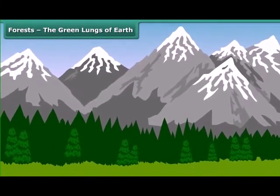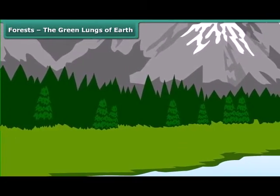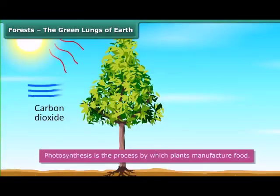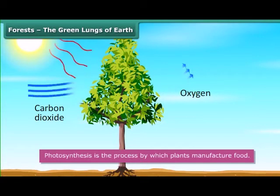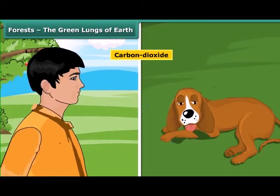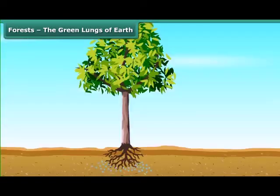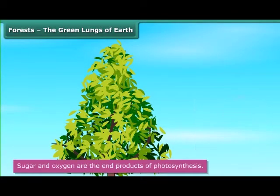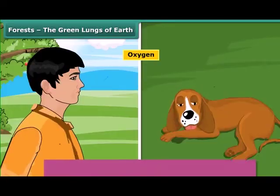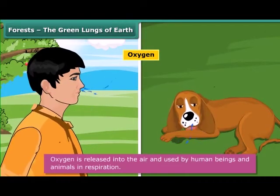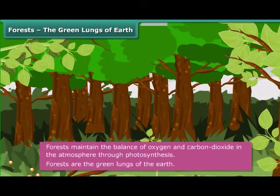Hills have dense forests. Forests maintain the balance of oxygen and carbon dioxide in the atmosphere through photosynthesis. Photosynthesis is the process by which plants manufacture food. Plant leaves use light from the sun to synthesize food from carbon dioxide and water. Carbon dioxide is released by human beings and animals. Water is absorbed from the soil by plants. Sugar and oxygen are the end products of photosynthesis. Sugar is transported to the rest of the plant, and oxygen is released into the air and used by human beings and animals in respiration. That is why forests are called the green lungs of the earth.